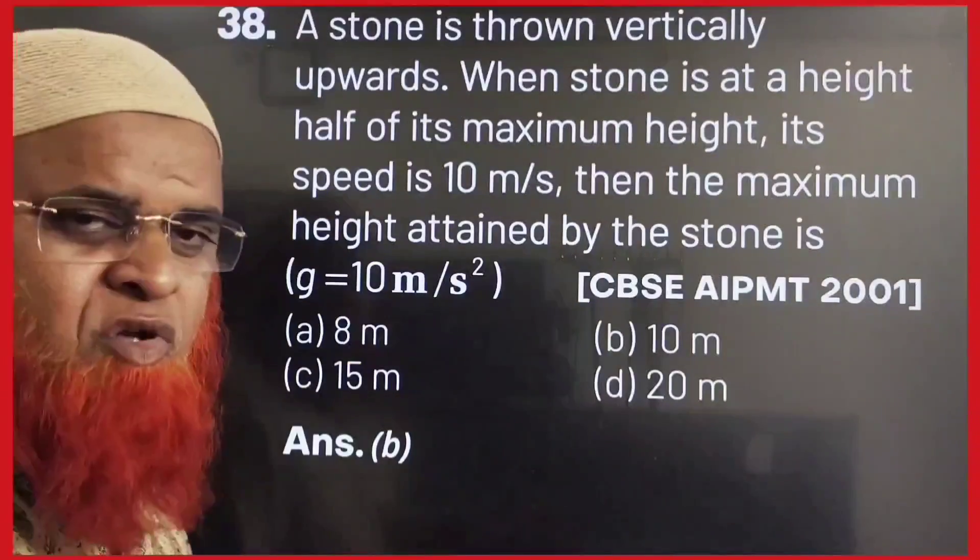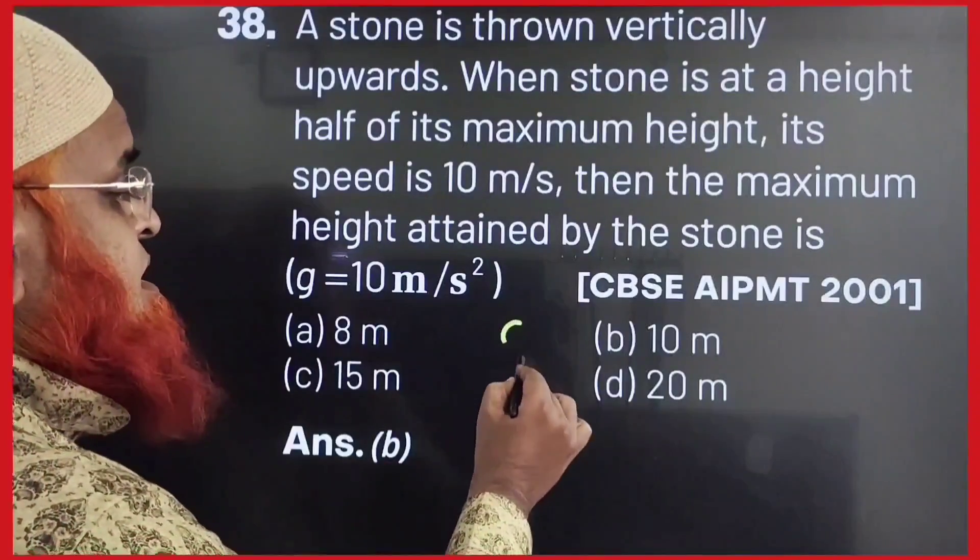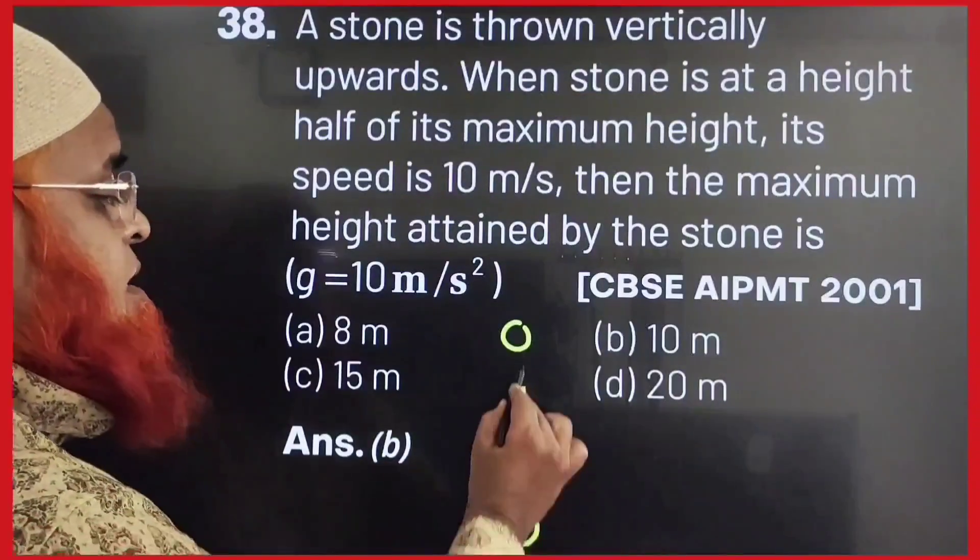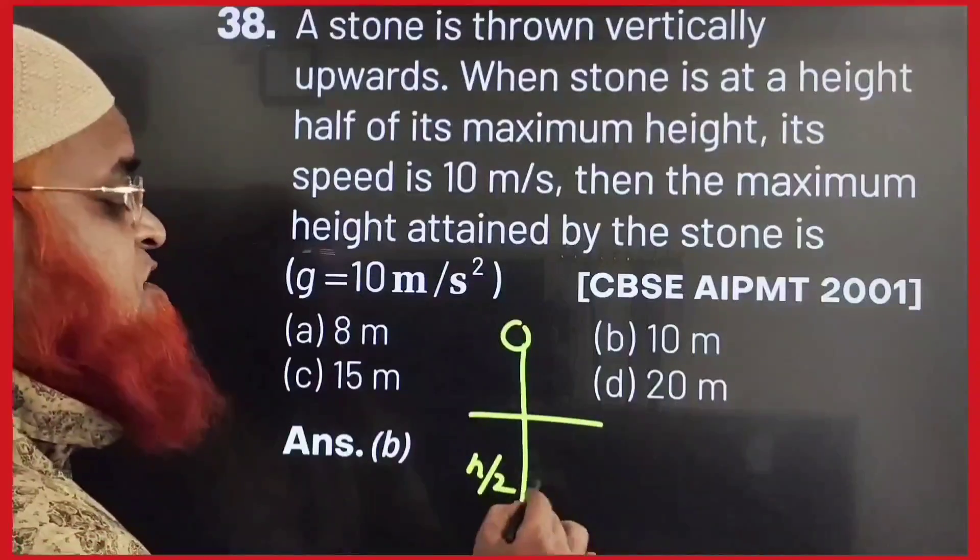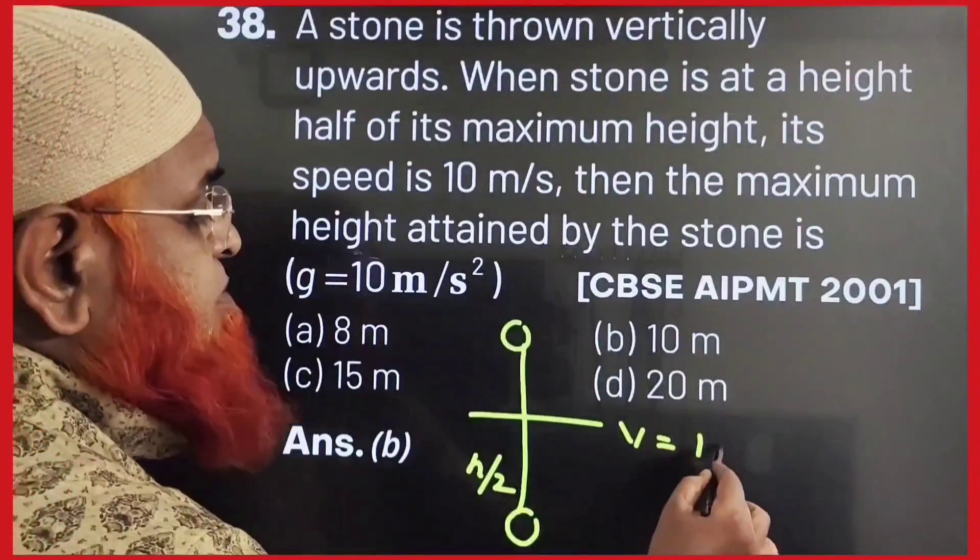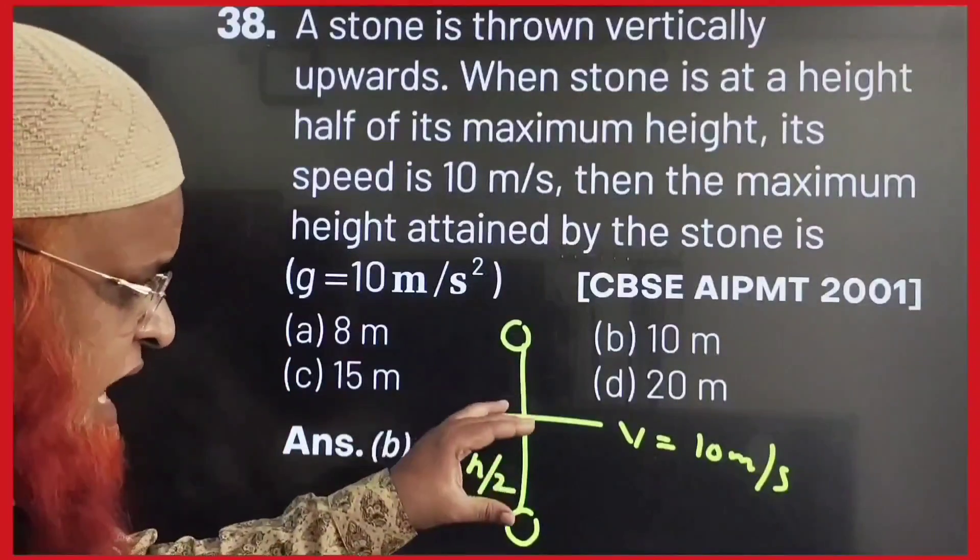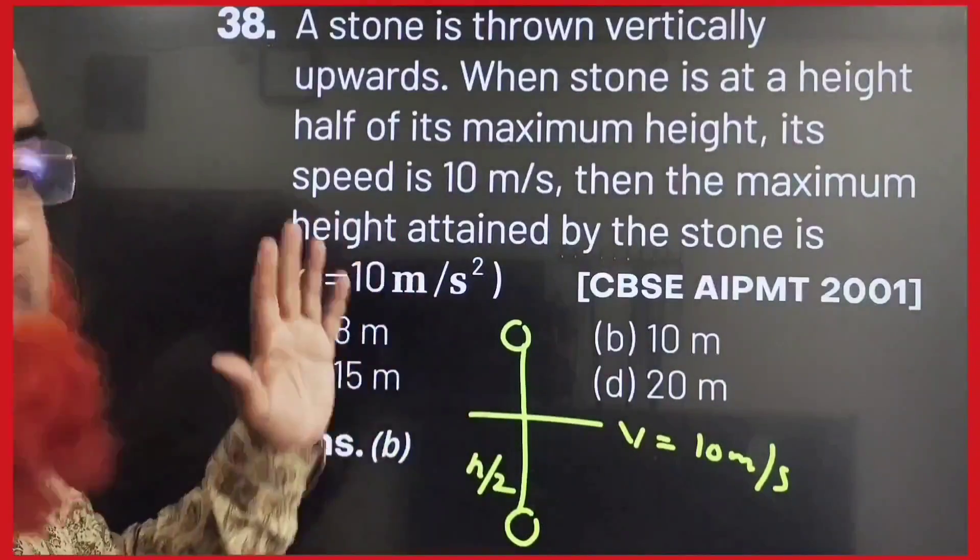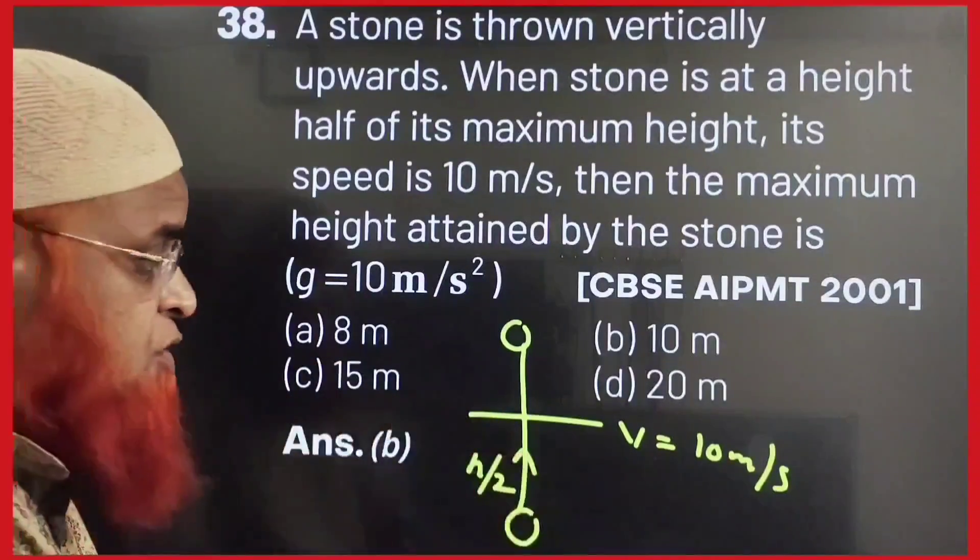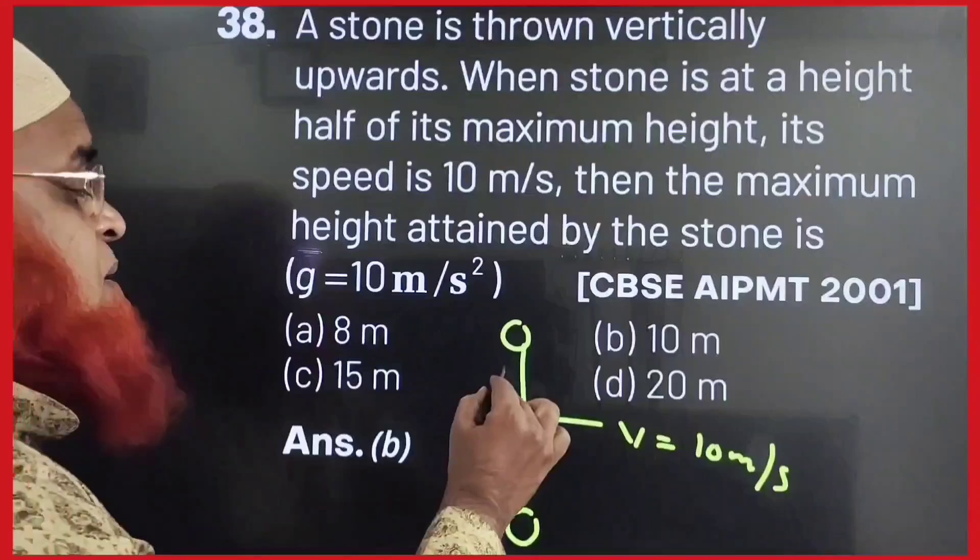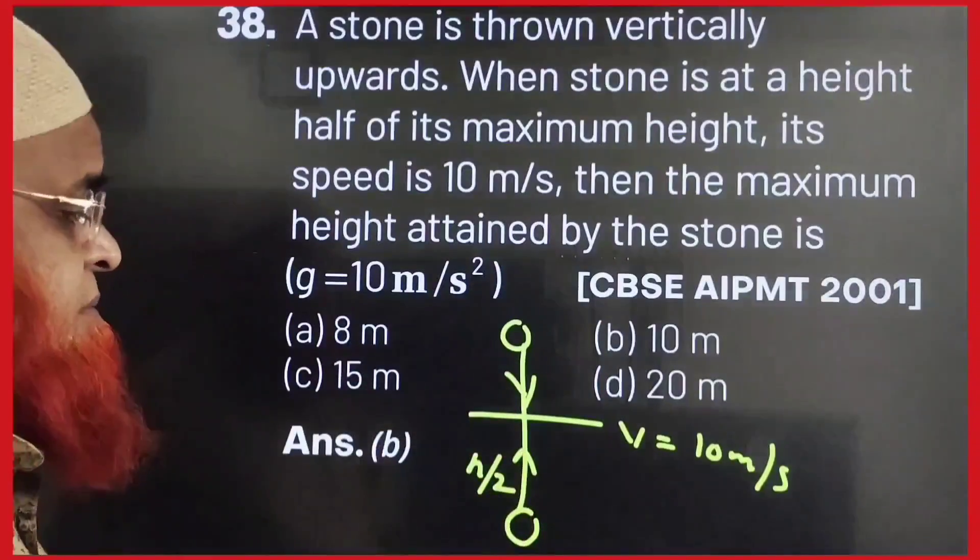Dear students, let us solve this problem in a reverse order. Actually, in this problem, it is said that a body is projected upwards. At half of the maximum height, that means at h by 2, velocity is given as 10 meters per second. Then, what is the maximum height? Actually, it is thrown upwards. But the problem will become very complex when you take upward direction. That's why I will take downward direction problem.